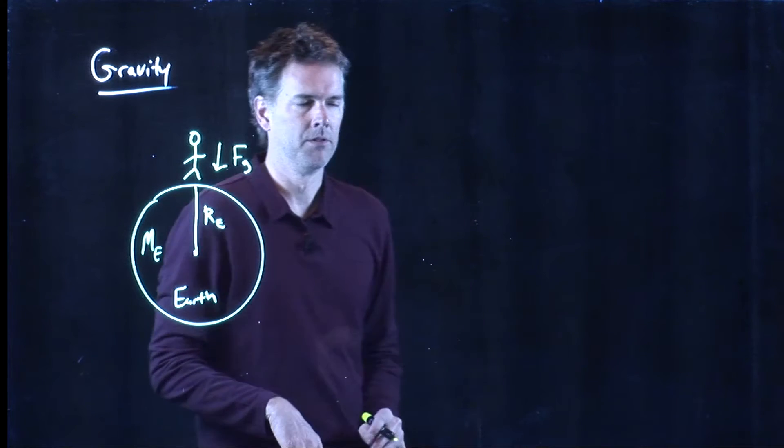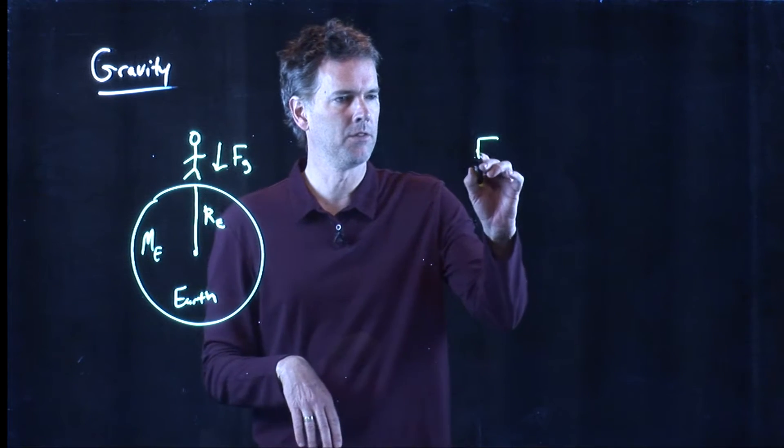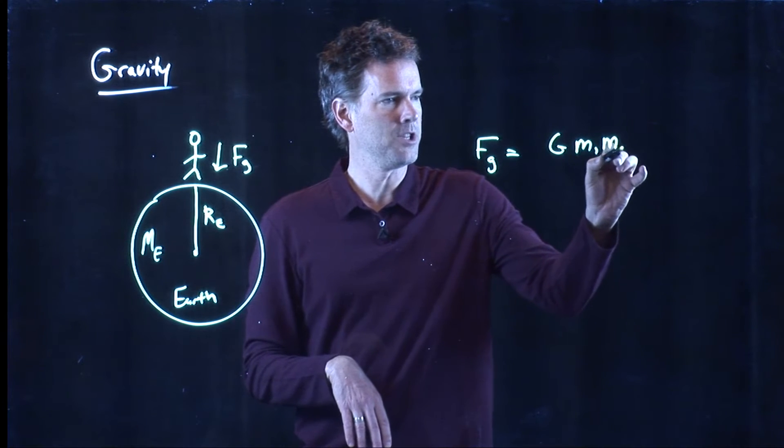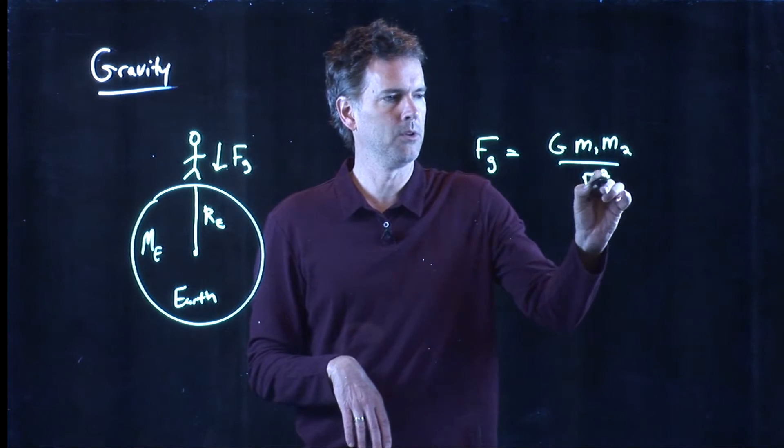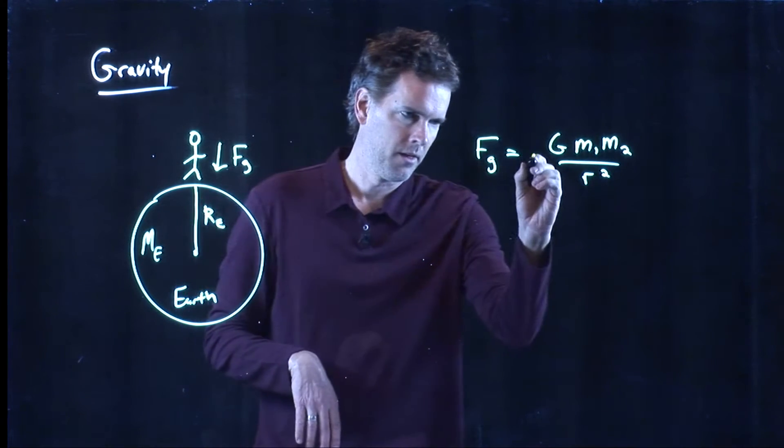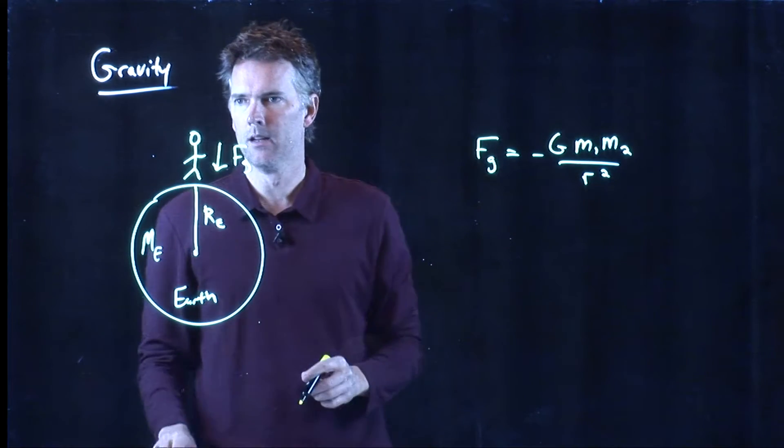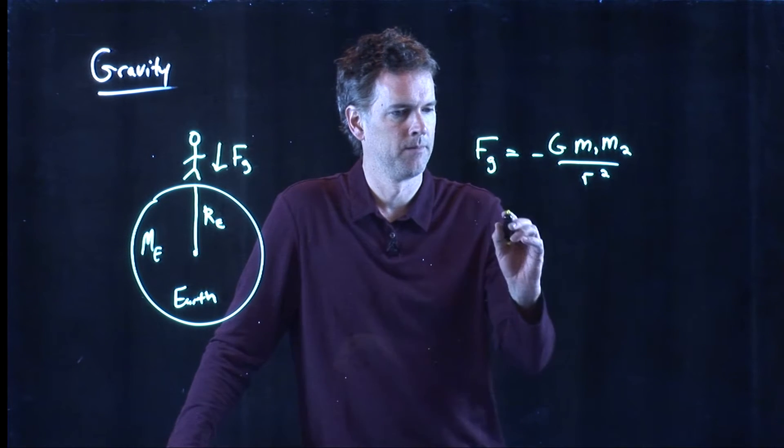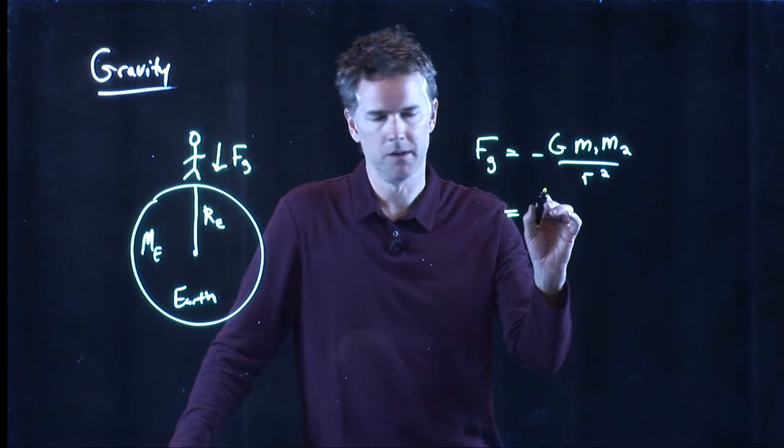Let's calculate what that force is. What we just said was the force is G M₁ M₂ over R squared. The negative sign indicates it's going down towards the center of the Earth—it's an attractive force. And now we can punch in some of these numbers.